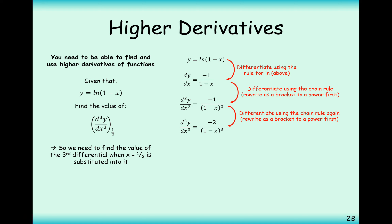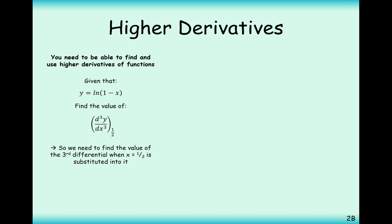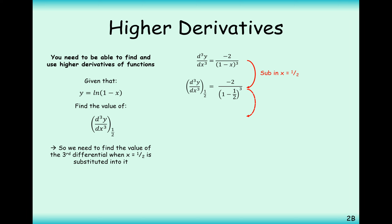So the third derivative is −2(1 − x)^(−3). To answer the question we substitute x = ½: replacing x with ½ and working it out stage by stage, we end up with −16. So the answer is −16.